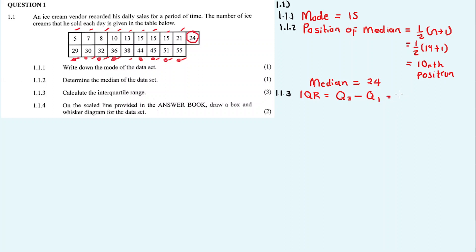So IQR = Q3 minus Q1. Counting 1, 2, 3, 4 on the left side, Q1 = 13. So it's 38 minus 13, which is 25. Our answer is 25.